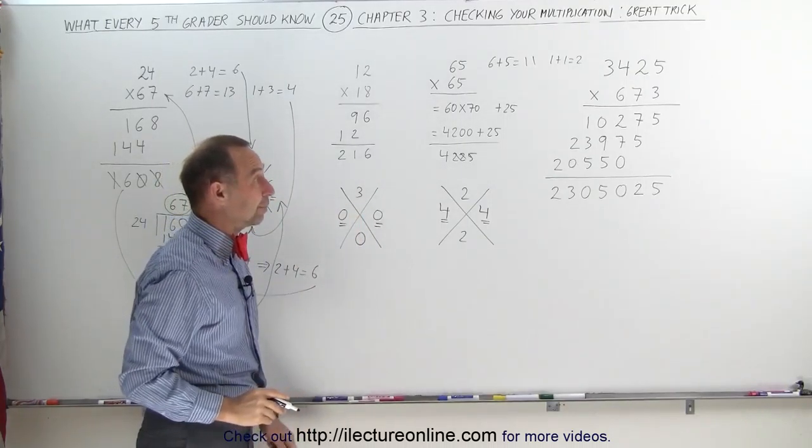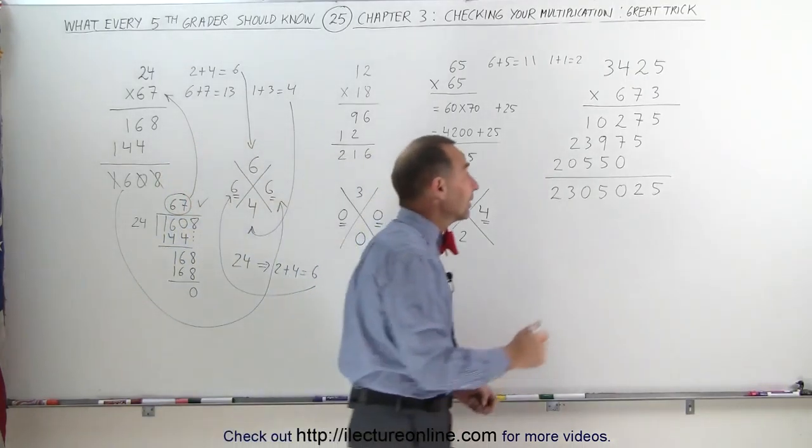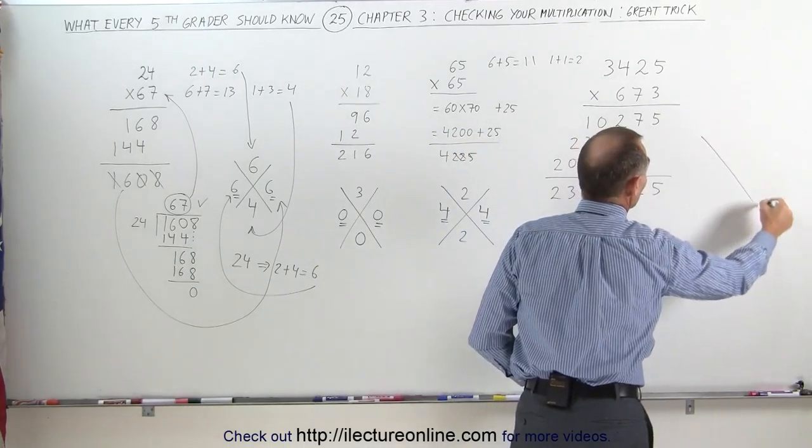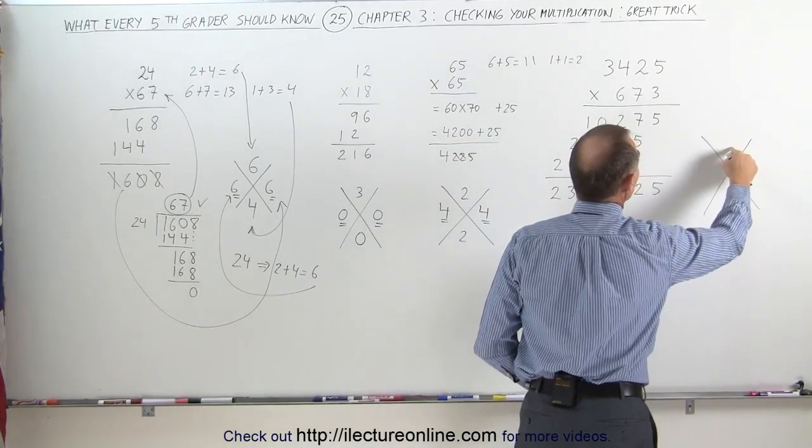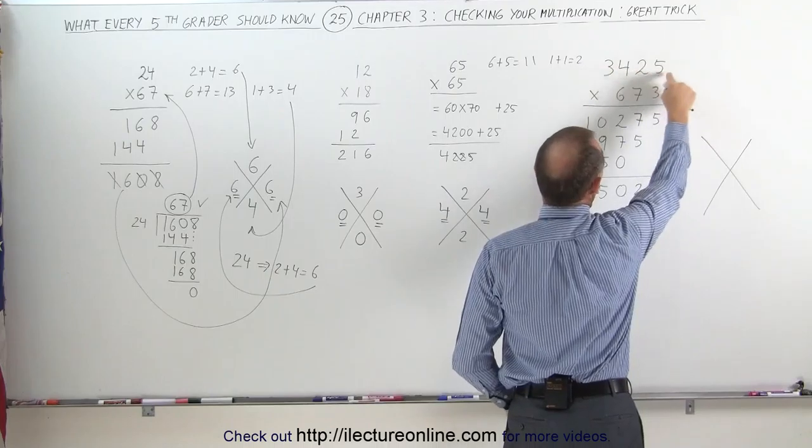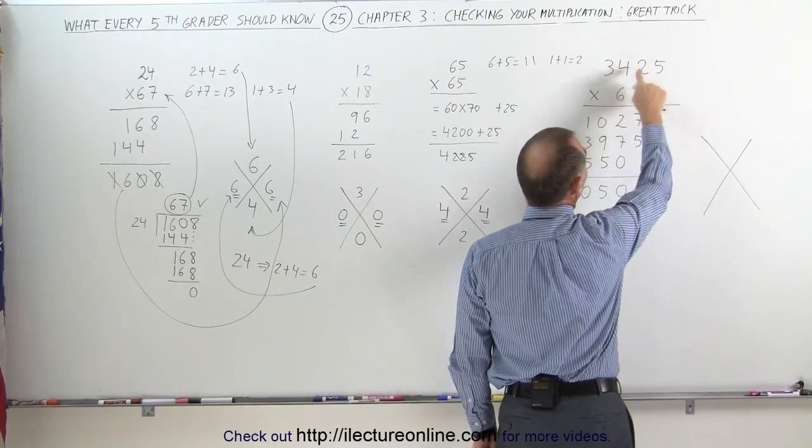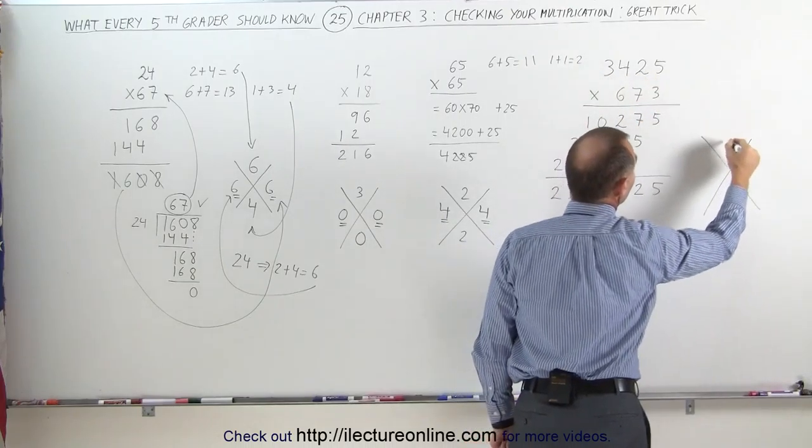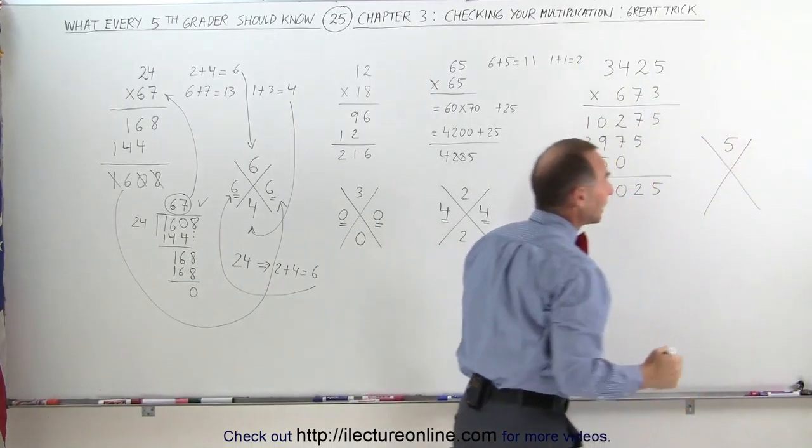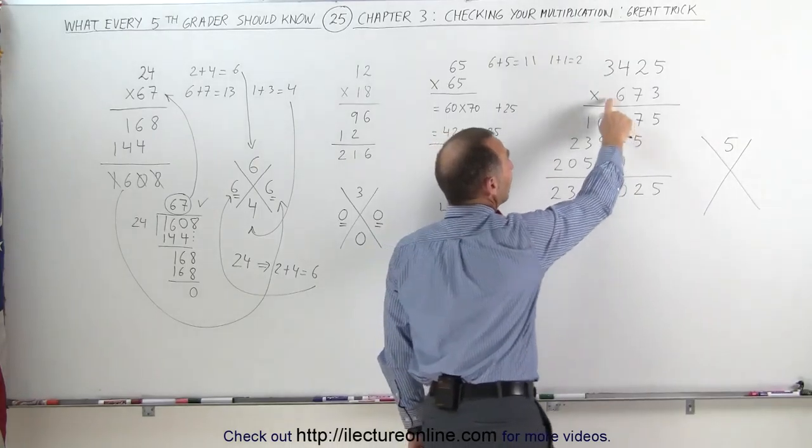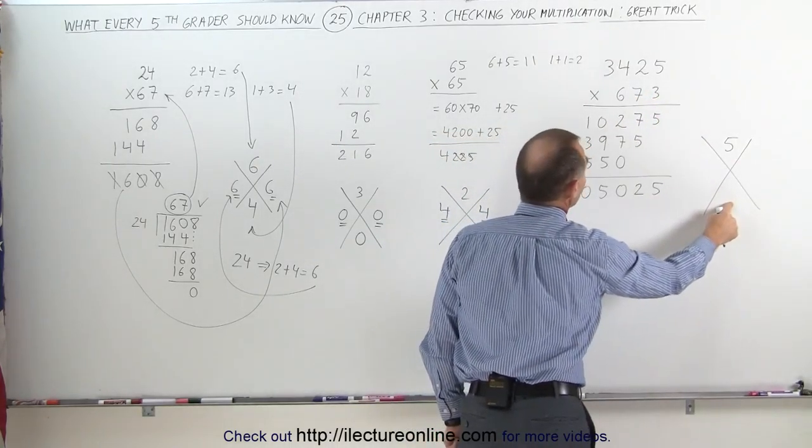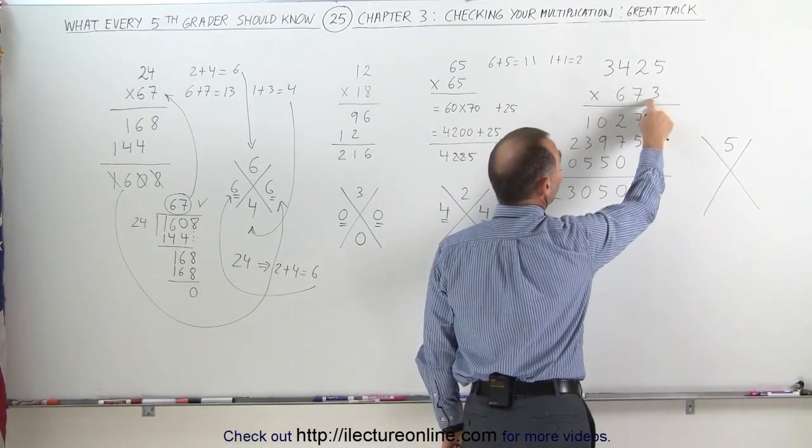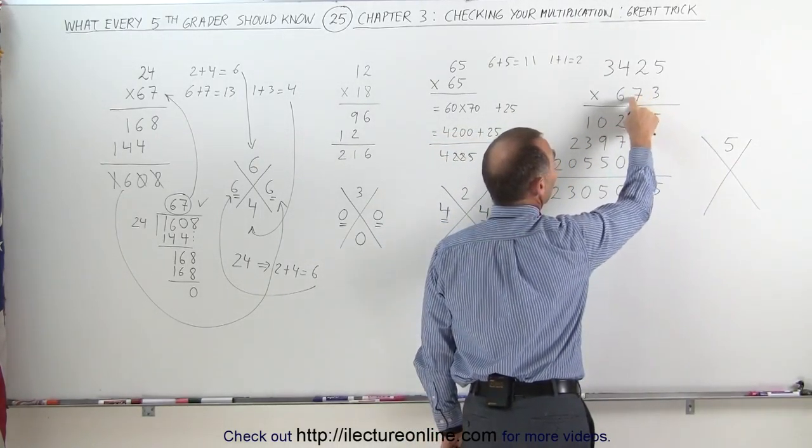So finally, for a really big challenging example, again, the technique is exactly the same, we draw the two lines. Up here, that is the sum of those numbers added together, but remember, 4 plus 5 is 9, the 9s drop out, all I have left is 3 plus 2, which is a 5, and I can put that over here. Next, I add these three numbers together and put those over here, but again, 6 plus 3 is 9, all I have left is a 7, that goes down here.